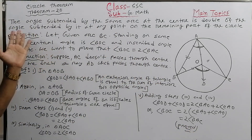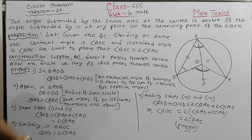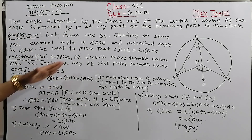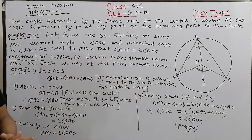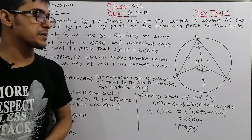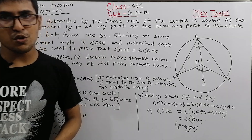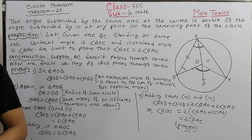This completes the proof of Theorem 20. The key steps — construction, exterior angle theorem, and isosceles triangle property — are very important to understand. Thank you so much.